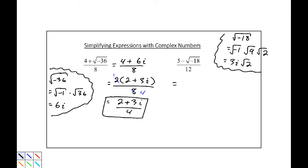Now we'll substitute that in. This is going to be 5 minus 3i root 2 all over 12. And actually, I don't think we can reduce this. So that is our final answer.